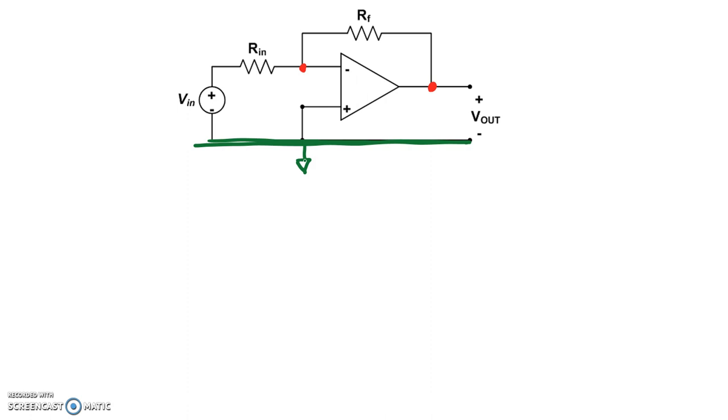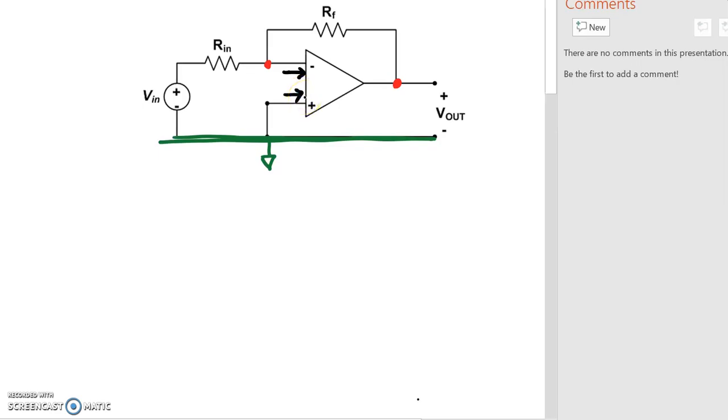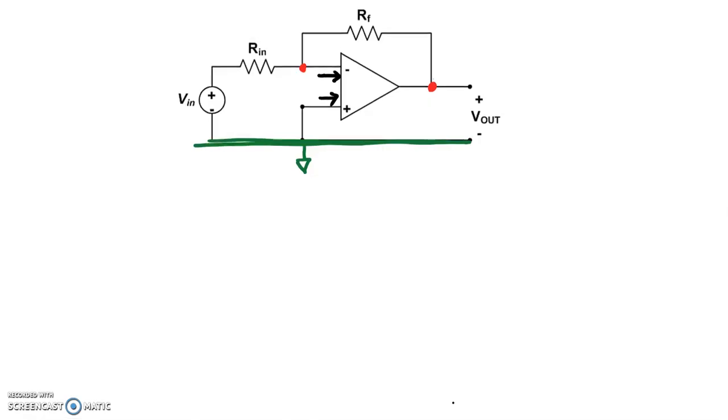Second, we're going to look at this particular op-amp as an ideal op-amp. So if we take a look at this as an ideal op-amp, we see that the ideal op-amp has a couple of properties. One property is that because of an infinite input impedance, the current going into the negative terminal and the current going into the positive terminal, that's equal to zero. So those two currents are equal to zero.